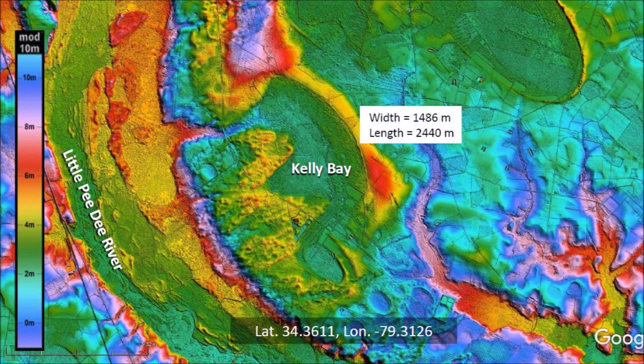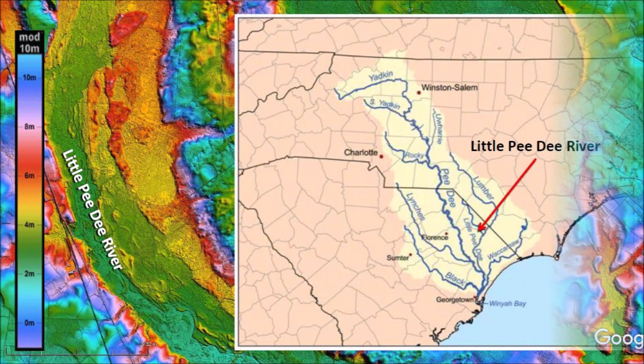Kelly Bay is a large Carolina bay with a length of 2,440 meters, which is one and a half miles. This bay is covered by two chevron dunes that have been interpreted as being of aeolian origin — that is, created by the wind. However, Kelly Bay is adjacent to the Little Pee Dee River and there are well-defined elliptical features along the river bank, suggesting that the incursions into Kelly Bay are splash chevrons and not aeolian sand dunes.